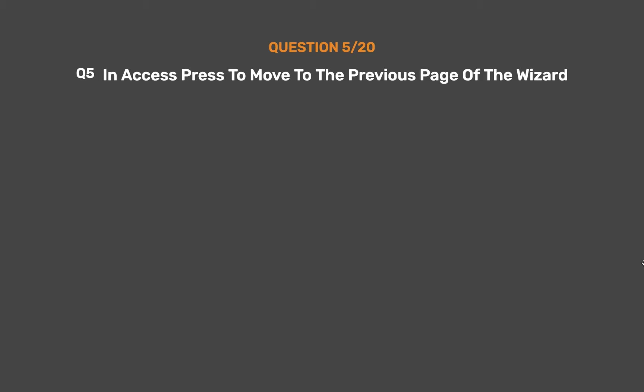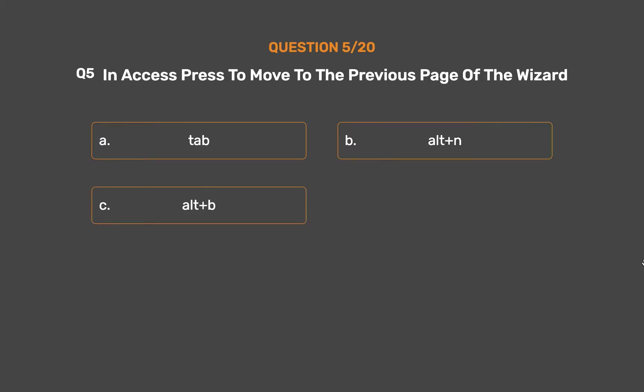Question number 5. In Access, press to move to the previous page of the wizard. Option A: Tab. Option B: Alt+N. Option C: Alt+B. Option D: Alt+F.